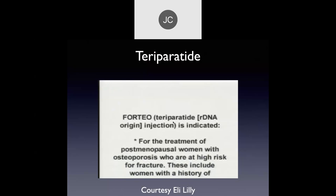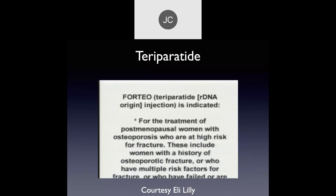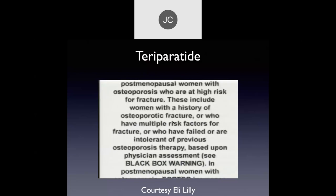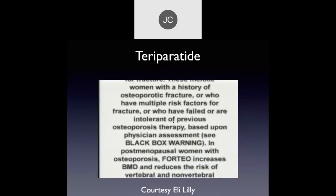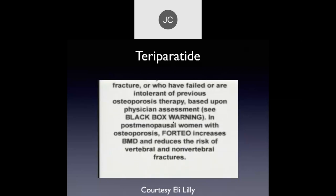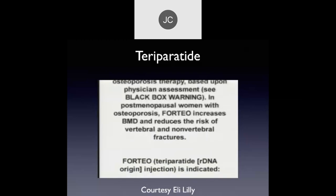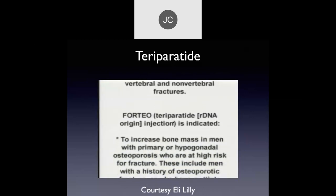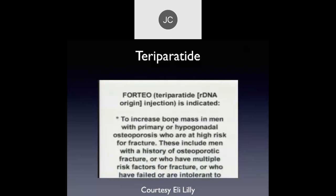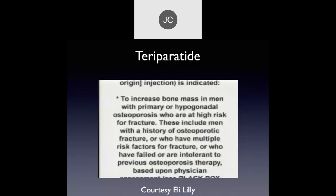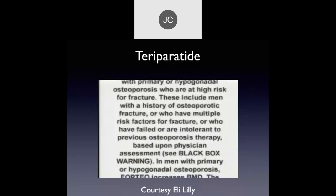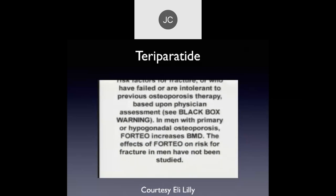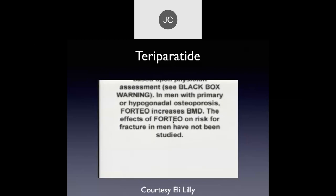Forteo (teriparatide rDNA origin injection) is indicated for treatment of postmenopausal women with osteoporosis at high risk for fracture — including women with a history of osteoporotic fracture, multiple risk factors for fracture, or who have failed previous osteoporosis therapy. In postmenopausal women with osteoporosis, Forteo increases BMD and reduces the risk of vertebral and nonvertebral fractures. It is also indicated to increase bone mass in men with primary or hypogonadal osteoporosis at high risk for fracture — Forteo increases BMD in these men, though effects on fracture risk in men have not been studied.